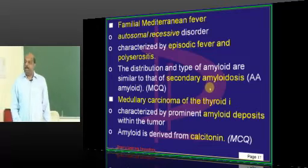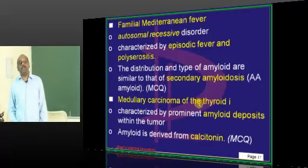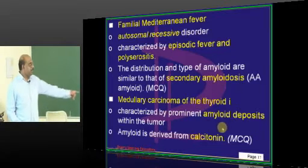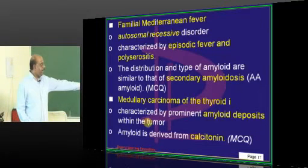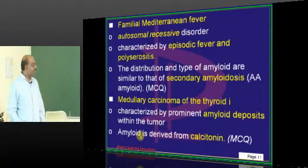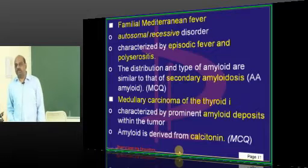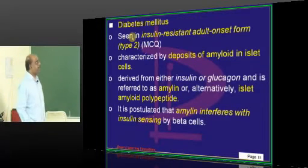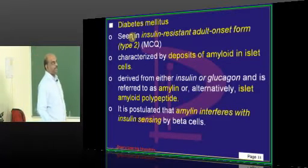In medullary carcinoma of the thyroid, amyloid deposits are found within the tumor itself, and here calcitonin is the precursor for the amyloid.